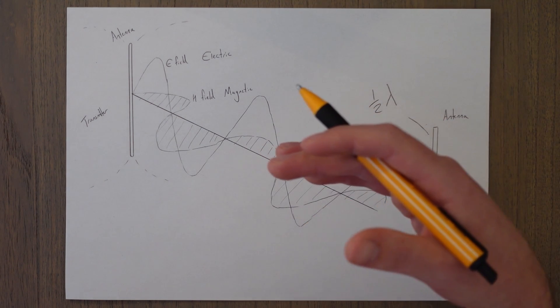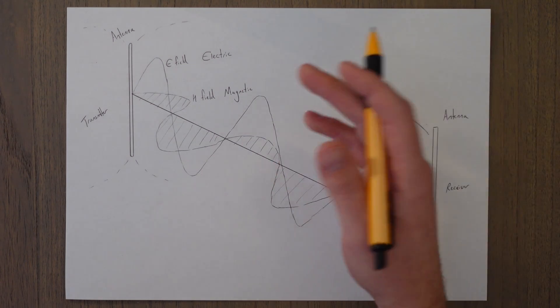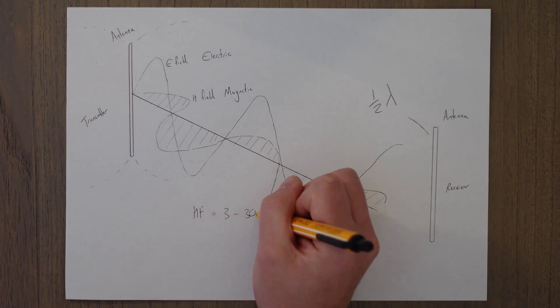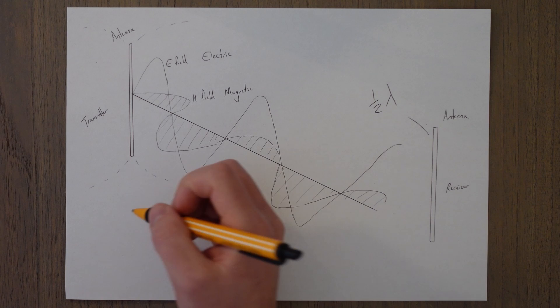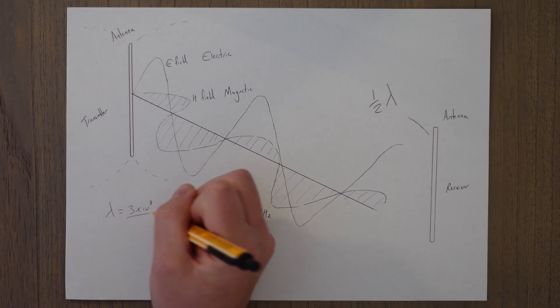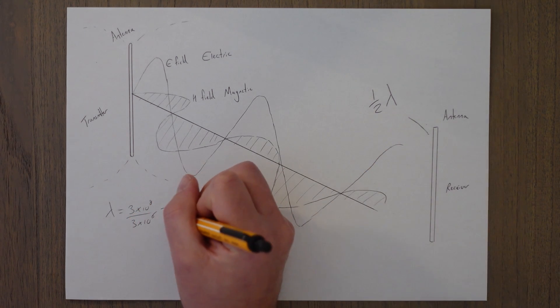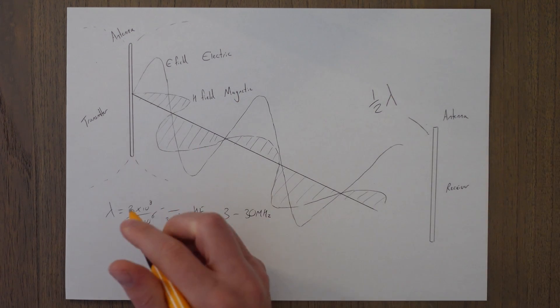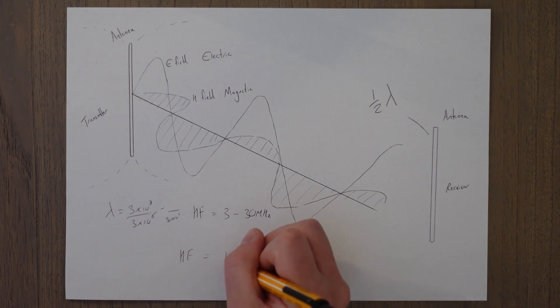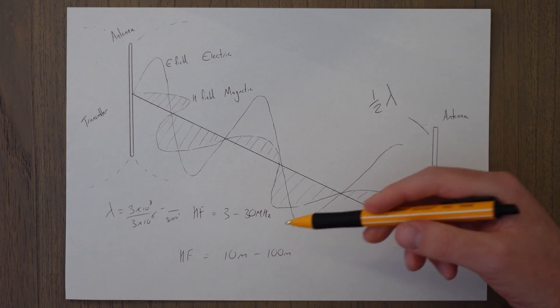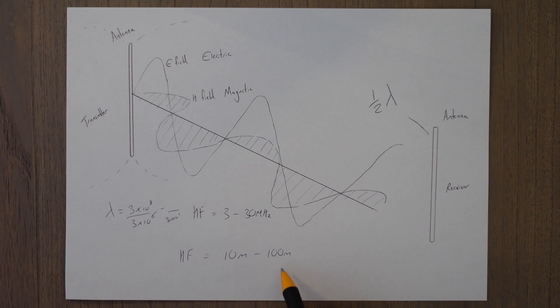To give you a quick idea if we work out the wavelengths for the high frequency band. The high frequency band goes from 3 to 30 megahertz and if you remember we calculate the wavelength by dividing the speed of light by that frequency. So in this case we'll have one that's 3 times 10 to the 6 and another one that's dividing it by 30 times 10 to the 6, and if we work that out that means that our wavelengths for the high frequency band is going to be between 10 meters and 100 meters. So ideally we want half of the wavelengths for our antenna. Can you imagine if we had a 50 meter tall antenna sticking out the top of our aircraft as we're flying around? It's not practical.